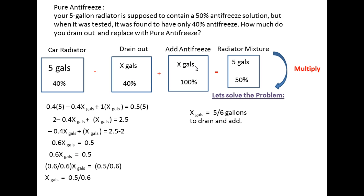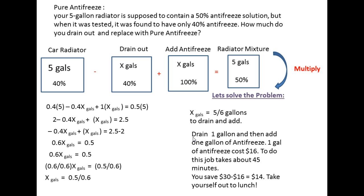Since x appears in both places, 5/6 gallons is almost 1 gallon. So drain out 1 gallon, then add 1 gallon of pure antifreeze. One gallon of antifreeze costs approximately $16, and the job takes about 45 minutes. You save $30 minus $16, which is $14 — so take yourself out to lunch! You did a good job.